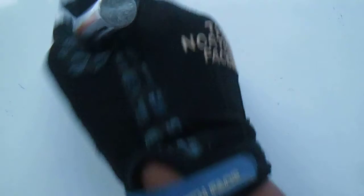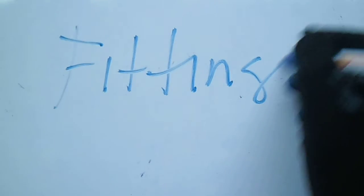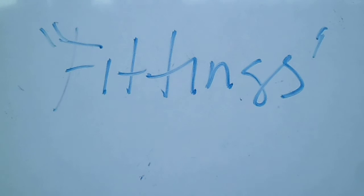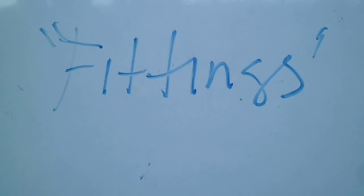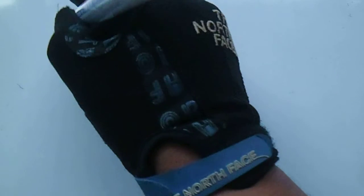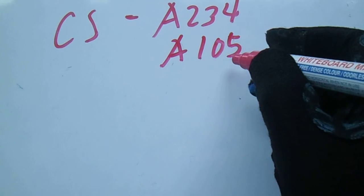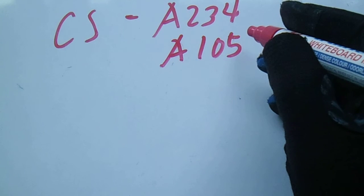The next item is fittings — including elbows and flanges. Fittings also come in Carbon Steel, LTCS, Alloy Steel, and Stainless Steel. For Carbon Steel fittings, the ASTM codes are A234 and A105.